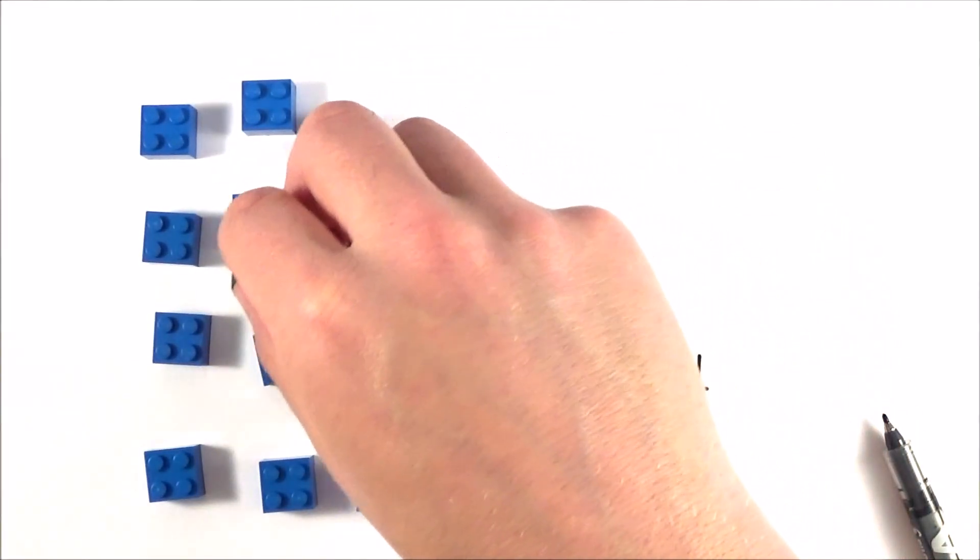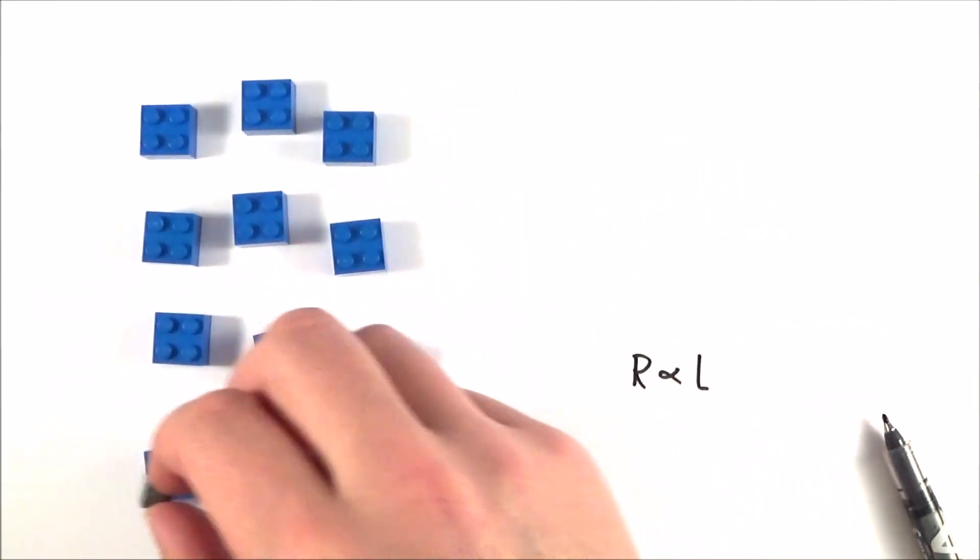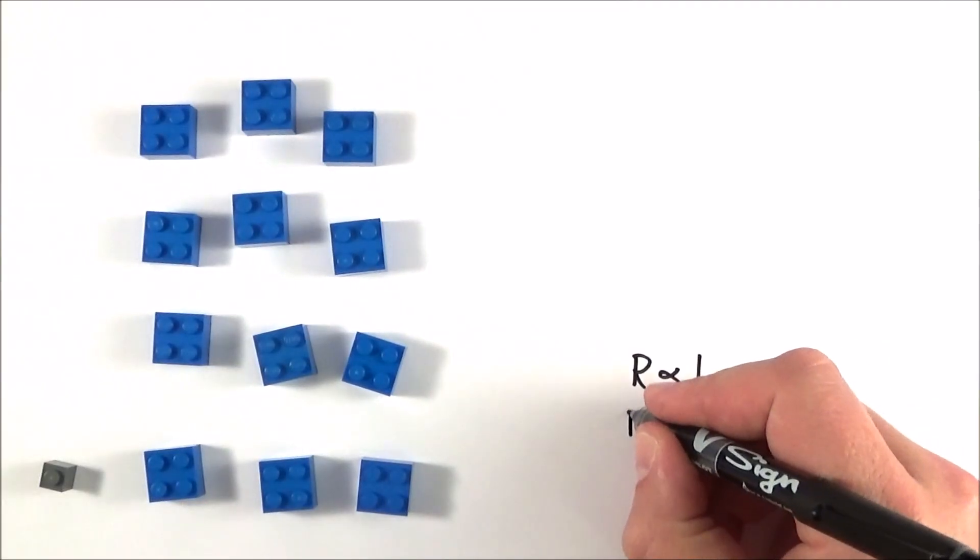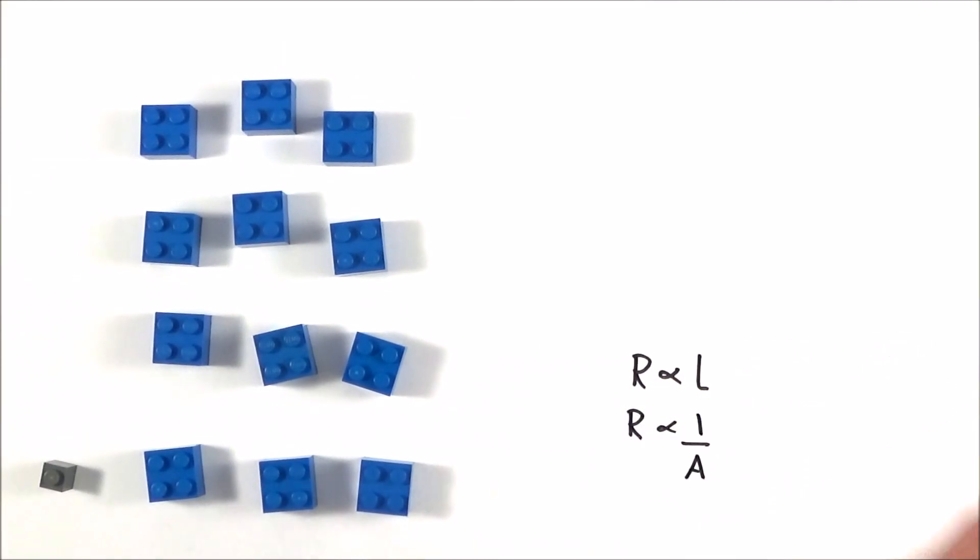It can choose to go the path of least resistance, and therefore if you have something which has a bigger area, the resistance actually goes down. What we can also say is that the resistance is proportional to one divided by the area.